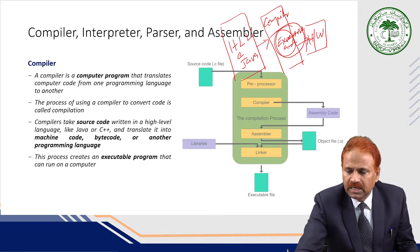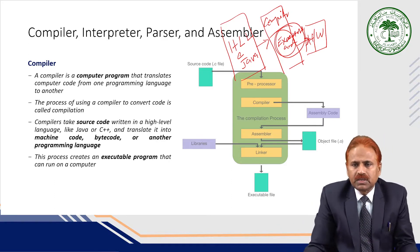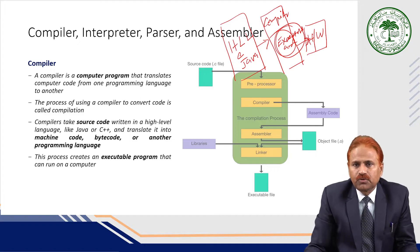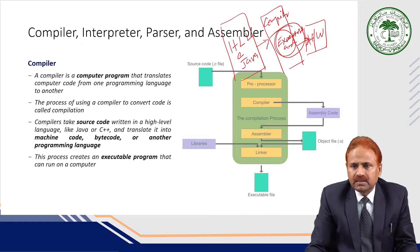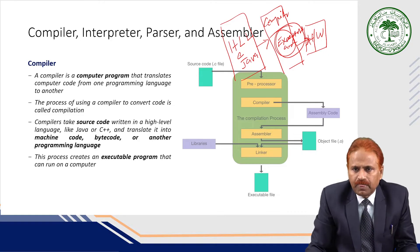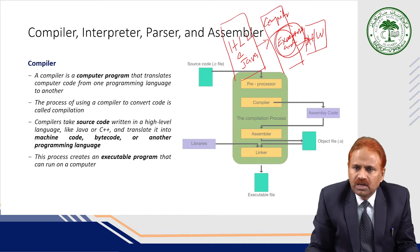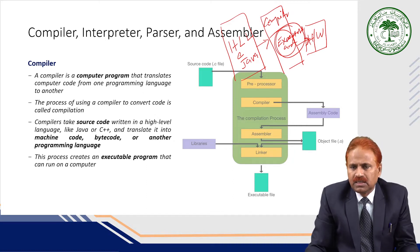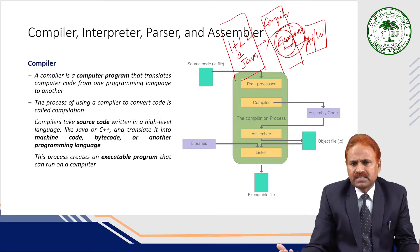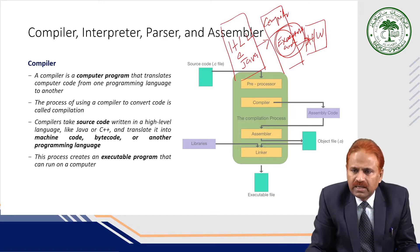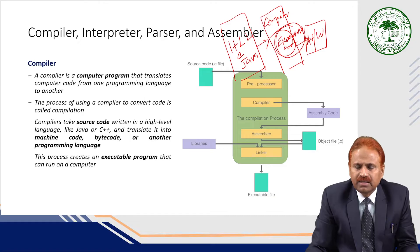In the compilation process, the source code written in C, Java, or any high-level language is first passed to the compiler. Inside the compiler, there is a preprocessor — it first goes to the preprocessor, then to the compiler. The compiler generates assembly-level code, which is passed to the assembler. The assembler generates an object file, which is the executable file. The object files are then passed to the linker, which links the required library files and generates the final executable file.